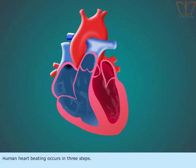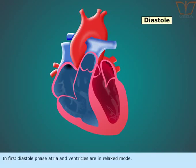Human heart beating occurs in three steps. In the first diastole phase, the atria and ventricle are in relaxed mode.